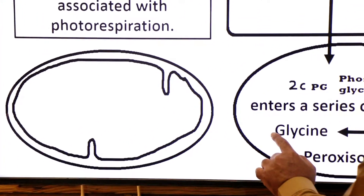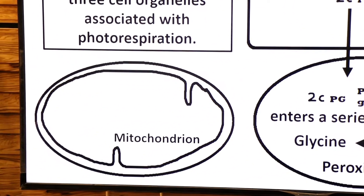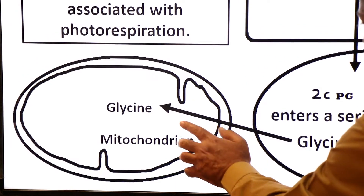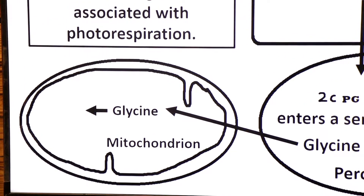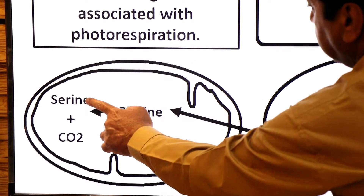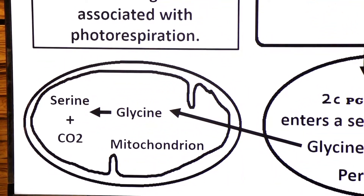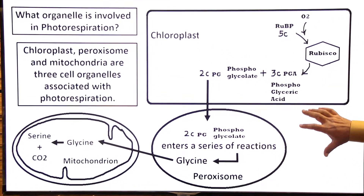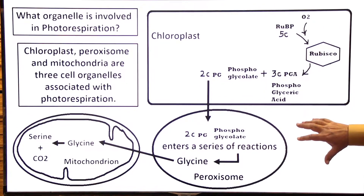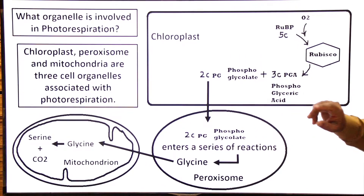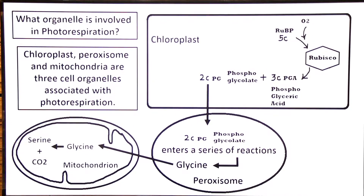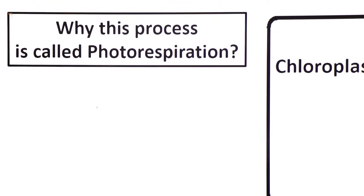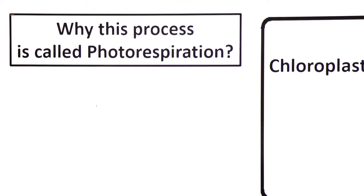The glycine then enters the mitochondria, where through a series of reactions it is converted into another amino acid, serine, plus carbon dioxide. So photorespiration uses three organelles: chloroplast, peroxisome, and mitochondria.